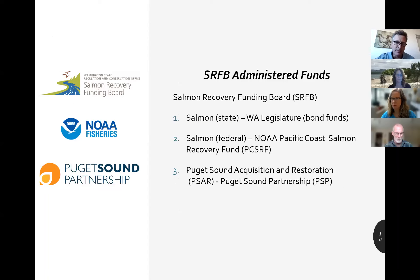For our program, funding is divided into three main pots. The first two are the surfboard funds — a mixture of state bond funds from the state legislature and federal funds received annually through NOAA from the PACSER, or Pacific Coast Salmon Recovery Funds. In even years, which we just completed in 2022, we get a separate pot of money for the Puget Sound region called PSAR funds, co-managed with our sister state agency the Puget Sound Partnership.